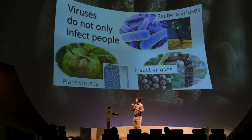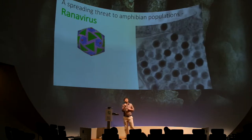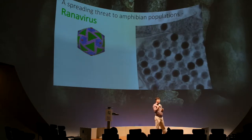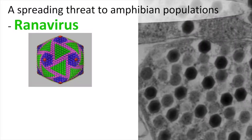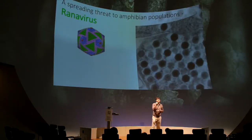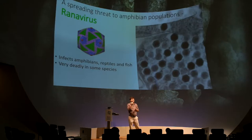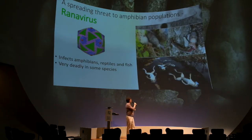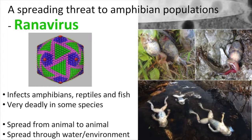The virus that I study is called ranavirus. This is a virus that infects frogs, amphibians, and reptiles. What we're looking at behind us is a colored representation of this virus, and to your right is a picture of the virus under a very sensitive microscope. This virus to frogs is about as bad as Ebola virus is to humans — at least for some frogs. We're looking at die-off events that have occurred from infection of frogs with this virus, so it is a pretty serious infectious agent in these animals.